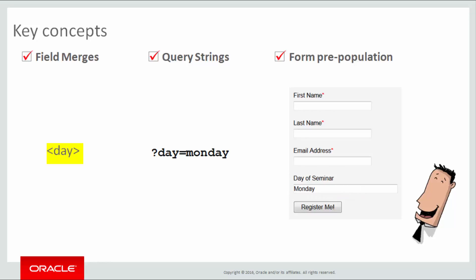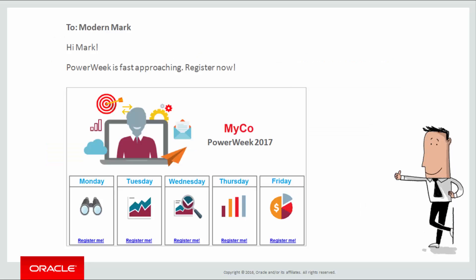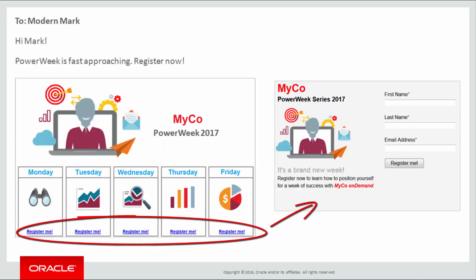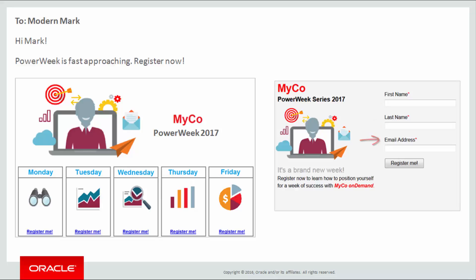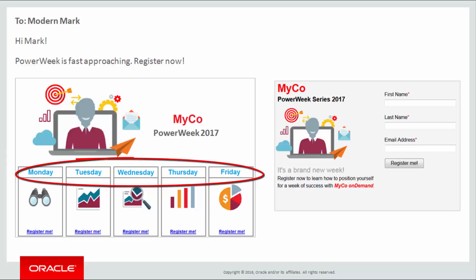That's what a fictitious company called Myco did. Myco was preparing for their annual five-day webinar series called Power Week. They created this email with registration links for each of the daily webinars. Initially the links took contacts to the same landing page which hosted the registration form. The form has three fields: visitors supply their first and last names as well as their email address, and then click register me to submit the form. But the form gives no indication of which seminar the submitter is registering for.